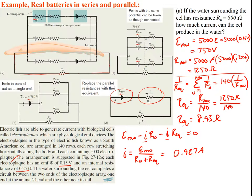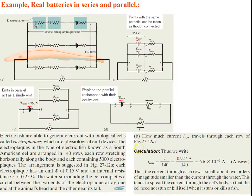This is a significant amount of current going through the water — enough to stun nearby fish. But the current through each individual row is just the total current divided by 140 (parallel rows): I_row = 0.927 / 140 ≈ 6.6 × 10⁻³ amps. The current through each row is about two orders of magnitude smaller, spreading the current through the eel's body so it doesn't stun or kill itself.